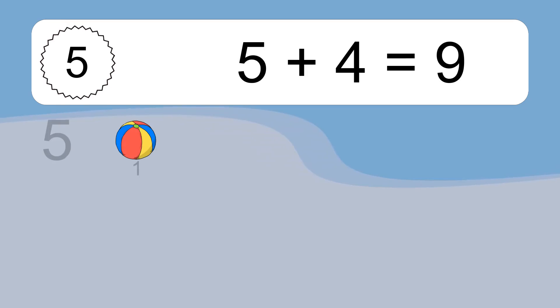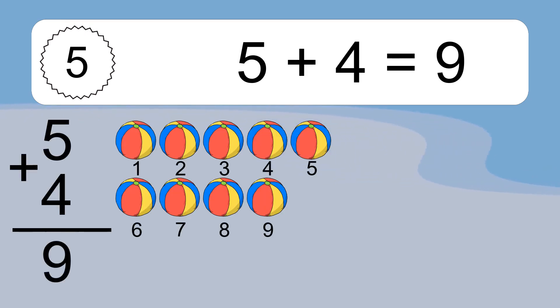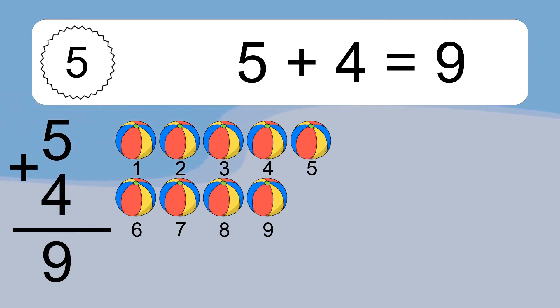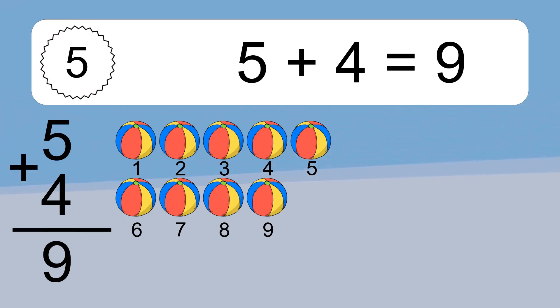5 plus 4 equals 9. Let's count it. 1, 2, 3, 4, 5, 6, 7, 8, 9.